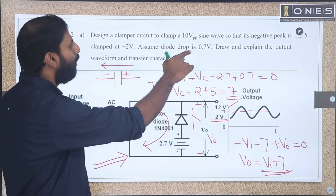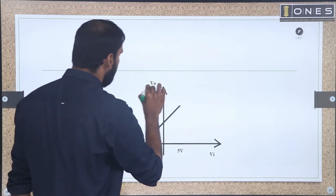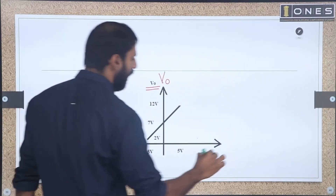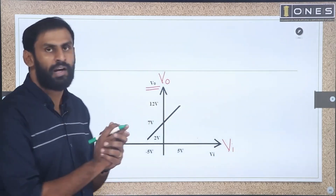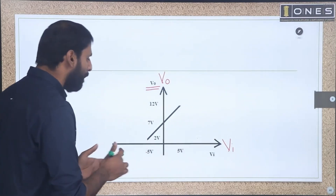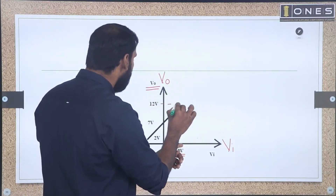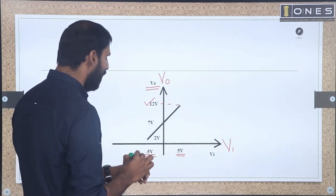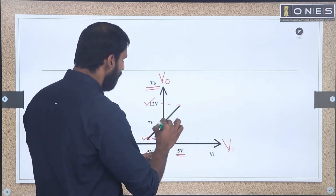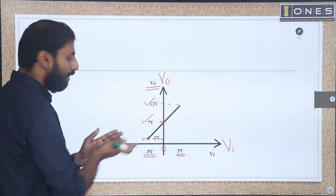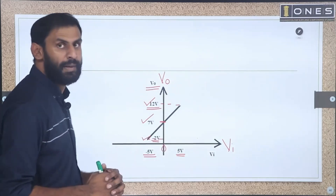We need to draw and explain the output waveform and the transfer characteristics. The transfer characteristic is a graph between output voltage on the y-axis and input voltage on the x-axis. When input is at positive peak of 5 volts, output is at 12 volts. When input is minus 5, output is 2 volts. When input is 0, output is 7. So the straight line is at 7 volts shift, maximum output is 12 and minimum output is 2. This is the transfer characteristic.